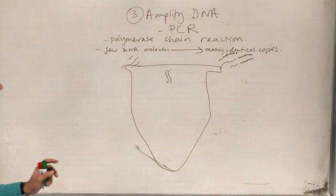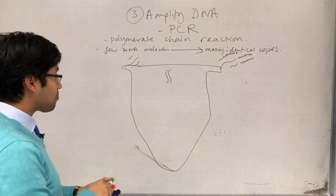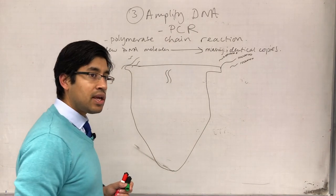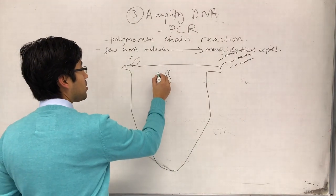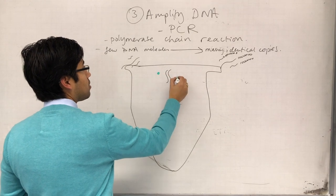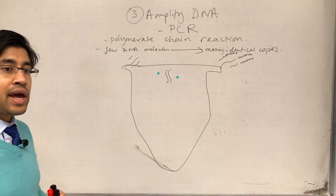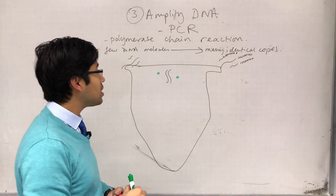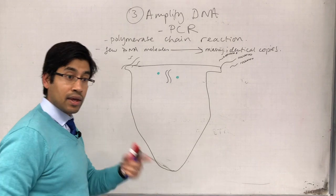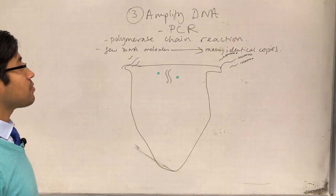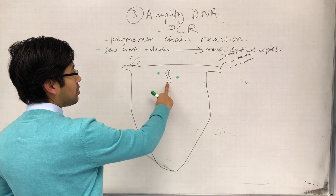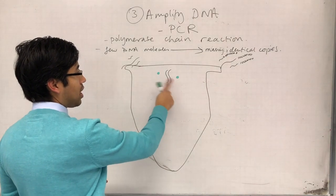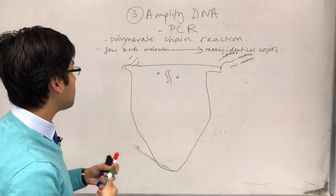Now, in this reaction tube, we need to add some other components. If we have DNA and we want to make more copies of the DNA, we need a few things. First, we need an enzyme called TAQ polymerase. It's just a specialized version of DNA polymerase.